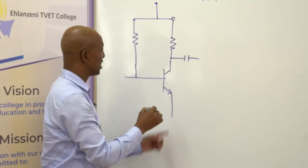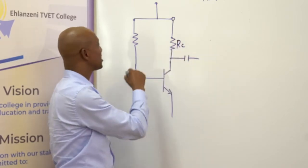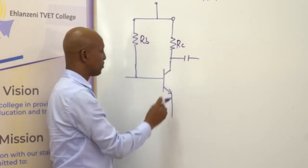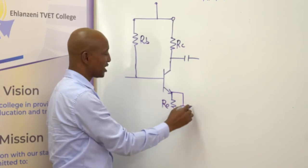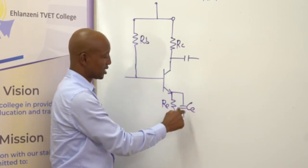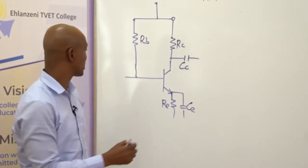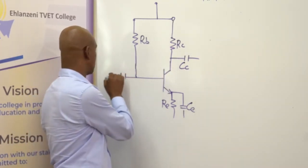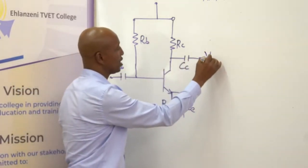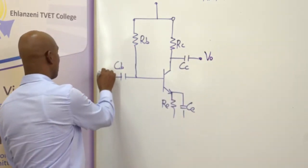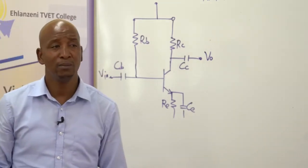We normally name the components according to the terminal they are connected to. We have RC for the collector, RB for the base, and RE for the emitter. We can also have a capacitor CE in the emitter, a capacitor CC on the collector, and a capacitor CB on the base. There is where we have our output, and there is where we have our VIN, our input. This is what we call an amplifier circuit.